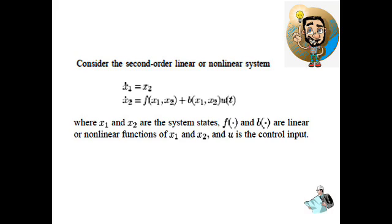Here we have a second order system given by this equation. Since it is second order, we have two state variables. F and B are non-linear, or they can be linear functions of state variables X1 and X2, while U is the control input.